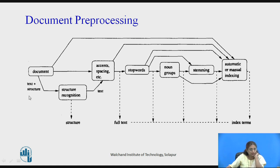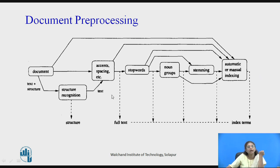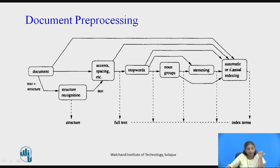Documents contain text and structure. For the text retrieval model, we are interested in the text, whereas in a structured retrieval model — where structure is also specified in the query — the structure is recognized. The output will include structure, and then text will be preprocessed. At any step, the algorithm can decide which words are to be used as index terms. After removing spaces, what remains can be taken as full text index terms, or one can proceed further by removing stop words, making noun groups, doing stemming, and then applying automatic or manual indexing. Any step can be skipped and index terms generated.